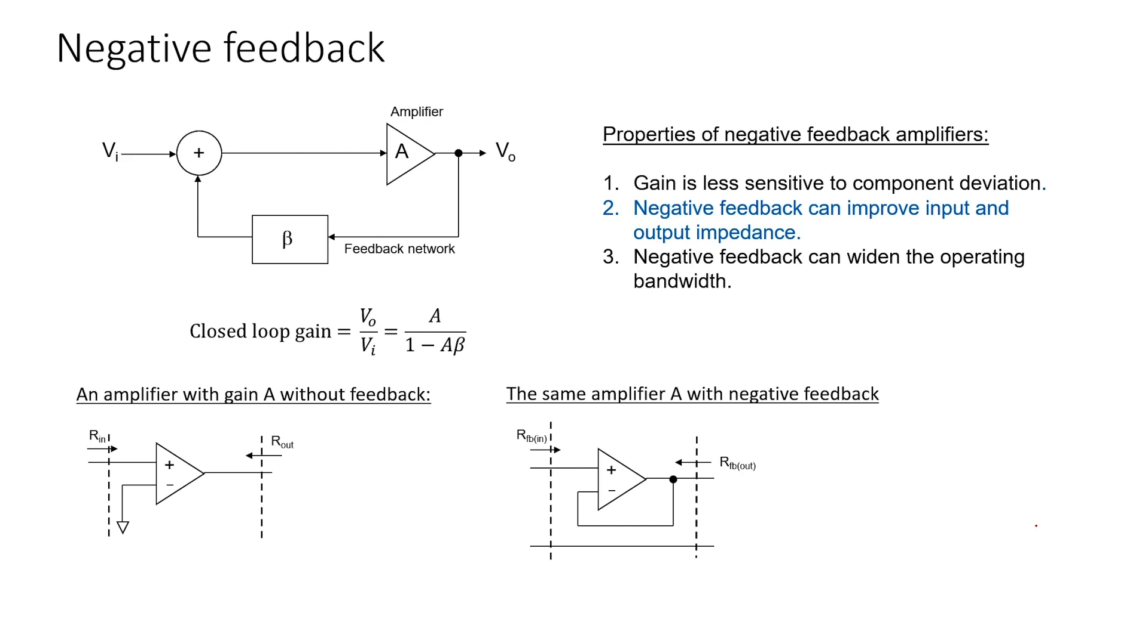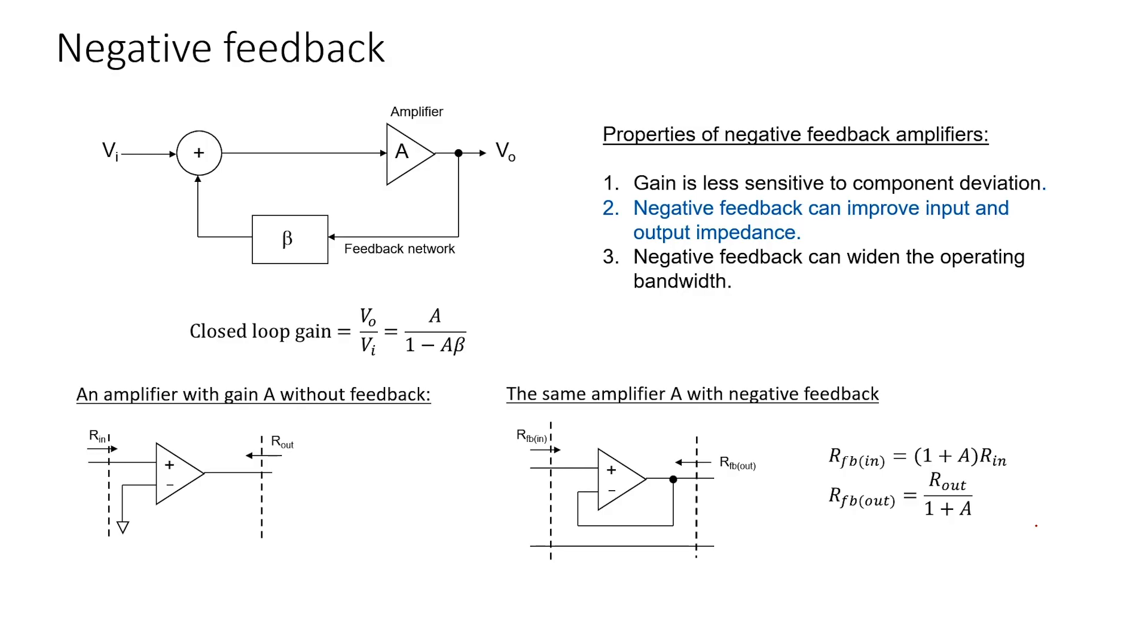For example, if I take a unity gain buffer, then it turns out that the input impedance will be increased by 1 plus whatever the nominal gain of the amplifier was. I'll derive these relationships in a subsequent video. For now, it's enough to know that negative feedback can improve input and output impedance.